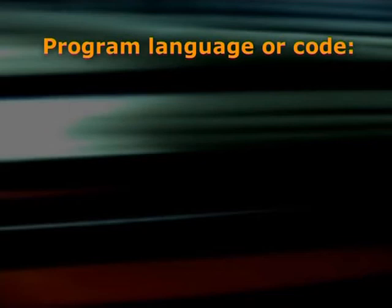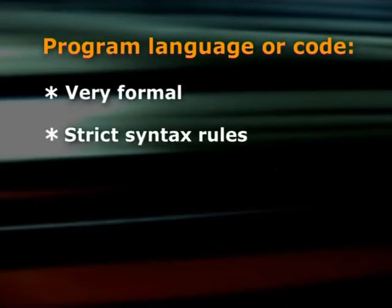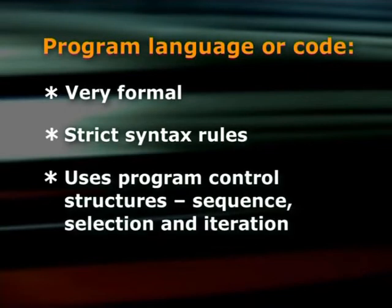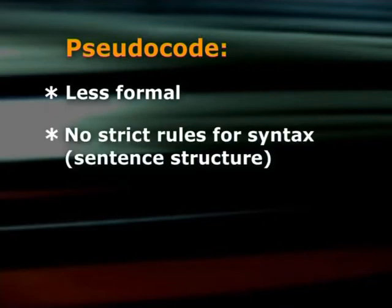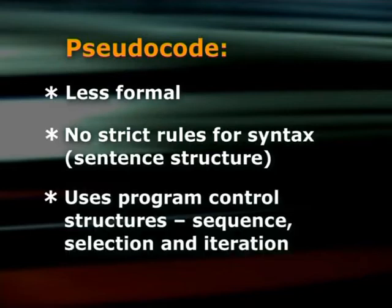Let's summarize the differences. Program language or code is very formal. It uses strict syntax rules. It uses program control structures like sequence, selections and iteration. Pseudocode is less formal, has no strict rules for syntax, meaning sentence structure. But it uses program control structures for sequence, selection and iteration.